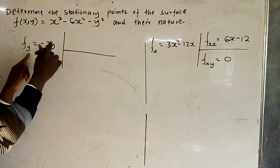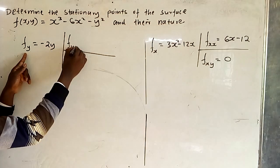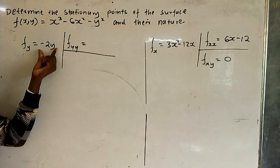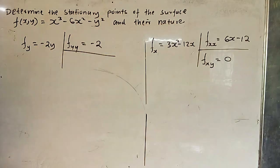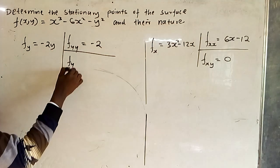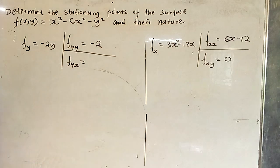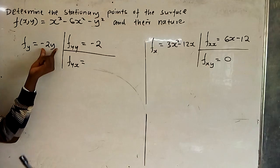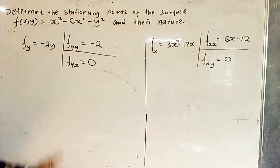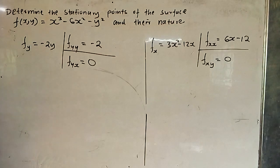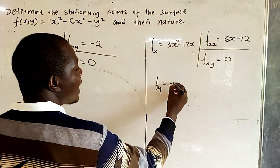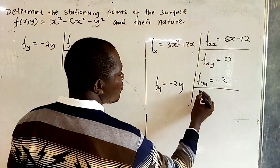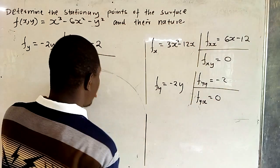We now differentiate f_y = -2y a second time partially with respect to y: we get f_yy = -2. Then differentiating f_y a first time with respect to y and the second time with respect to x: -2y has no x, so it is a constant, giving f_yx = 0. So in summary, f_y = -2y, f_yy = -2, and f_yx = 0.